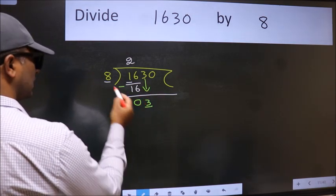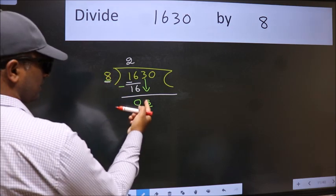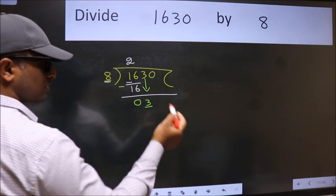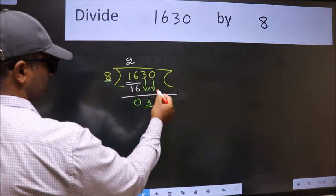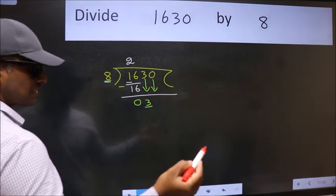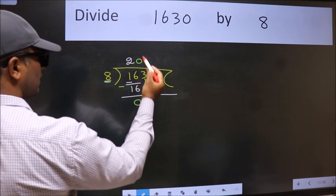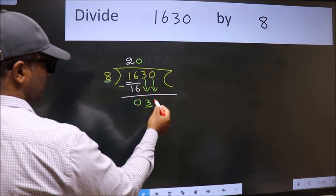Now here we have 3 and here 8. 3 is smaller than 8, so we should bring down the second number. And the rule to bring down the second number is put 0 here. Then only we can bring this number down.